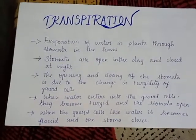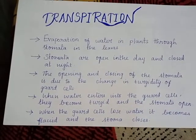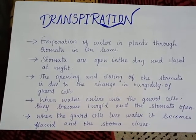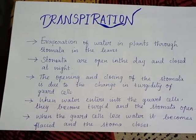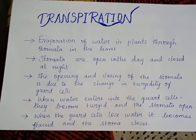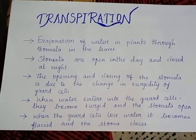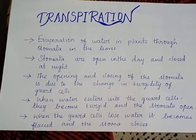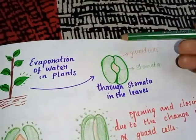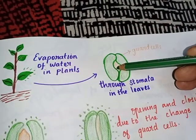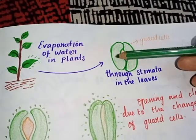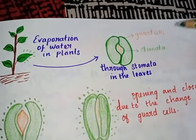Evaporation of water in plants through stomata in the leaves. Stomata are open in the day and closed at night. The opening and closing of stomata is due to the change in turgidity of guard cells. See, this is a stomata — this portion is the stomata and this is the guard cells. The bean-shaped cells are called guard cells.